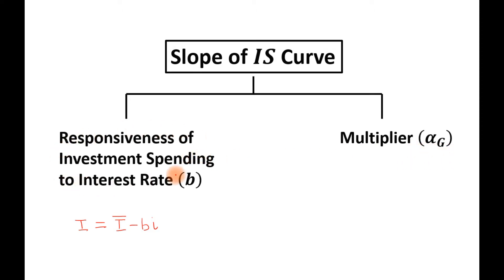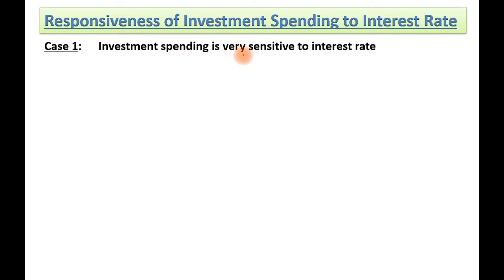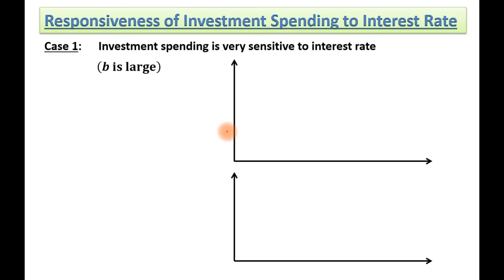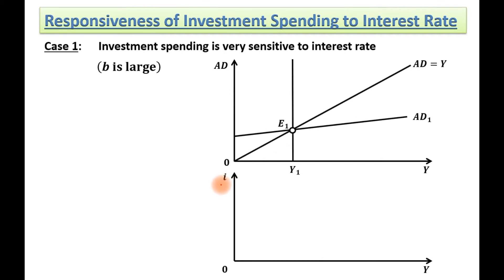First we will talk about the factor of responsiveness of investment spending to interest rate. Case 1: investment spending is very sensitive to interest rate, meaning B is large. Here we have two panels. In the upper panel, income or output is on the horizontal axis and aggregate demand is on the vertical axis. In the lower panel, income or output is on the horizontal axis and interest rate is on the vertical axis. This is our initial equilibrium point E1.